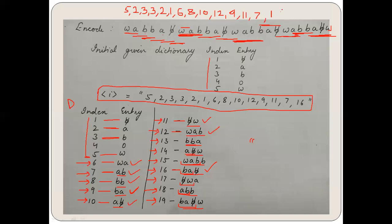So the final output for LZW encoding is: 5, 2, 3, 3, 2, 1, 6, 8, 10, 12, 9, 11, 7, 16. This is the single-parameter output (I) that LZW produces, which is more compact than LZ77's triplet or LZ78's doublet. I hope you have understood this particular technique. Thank you very much.